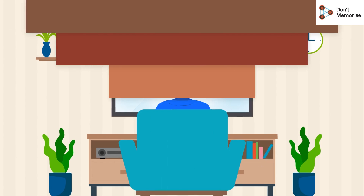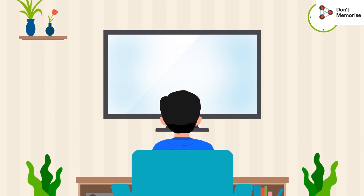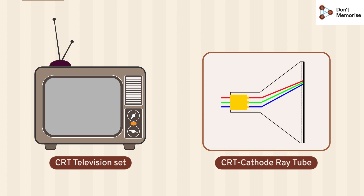Hi guys, we all love watching television, don't we? But television sets today are very different from the ones made 20 years ago. The television sets then had a box-like structure and were called CRT television sets. CRT stands for cathode ray tube, which was used to display images on the screen.